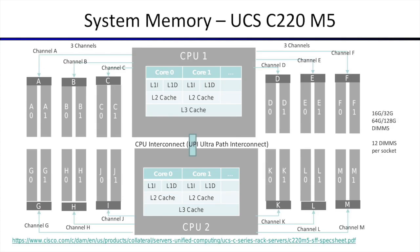Now let's look at how the CPU is built into a real system. The example here is the Cisco UCS C220 M5, whose full specifications are available via the URL provided. It supports two CPU sockets, each taking an Intel Xeon 8180, giving you L1, L2, L3 caches and 28 cores per CPU. The two CPUs are connected to each other via the Ultra Path Interconnect (UPI).